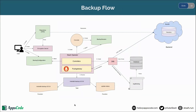Now we are going to take a backup of this inserted data. This is our backup flow. The user creates a repository first, and this repository contains information about the backend — for example, the name of the bucket where data will be stored, the path where data is going to be stored, and an encryption secret used by Stash to encrypt the backup data. Then the user creates a backup configuration specifying the schedule that determines how frequently backup will take place and the target of the backup. Stash operator watches for this backup configuration resource and when it finds one, it creates a cron job according to the schedule.